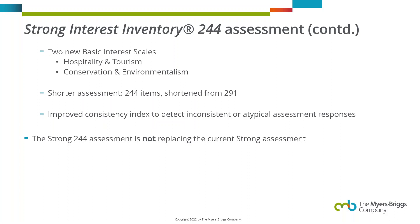We've made improvements across all sets of scales. Two new basic interest scales have been added to the Strong 244, bringing the total to 32: hospitality and tourism, which falls under the social theme, and conservation and environmentalism, which falls under the investigative theme. We've also improved the consistency index to detect inconsistent or inattentive responding, and done all of this while shortening the assessment by over 40 items. Importantly, this new assessment is not replacing the current Strong assessment — the current Strong will continue to exist, and the Strong 244 and the Career Satisfaction Report are newly available options for practitioners.